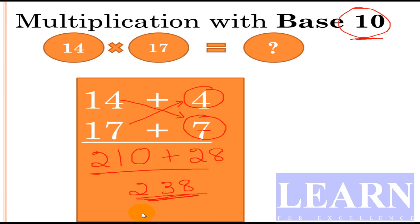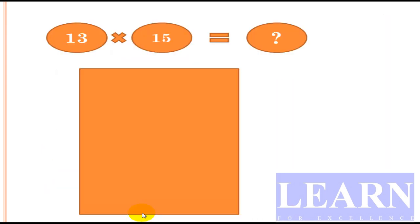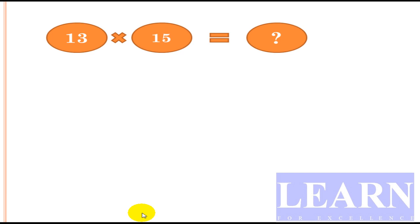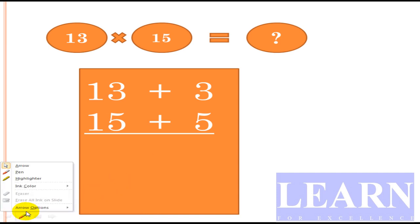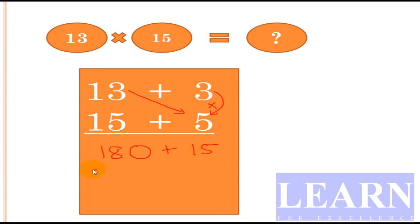First, we'll write 13 and 15 in the same format. 13 can be written as 13 + 3, and 15 can be written as 15 + 5. So 13 + 5, cross addition, 13 + 5 is 18. What is the next step? Add zero to it. Plus 3 multiplied by 5. 3 × 5 is 15. So what is the total result? The total result is 195. 180 + 15 is 195.